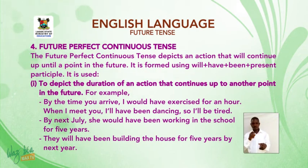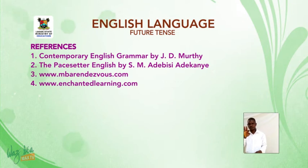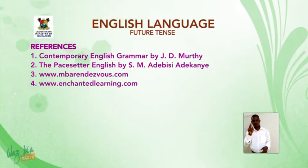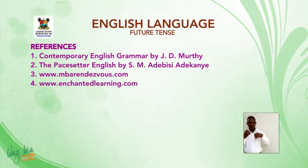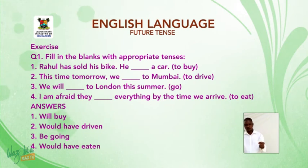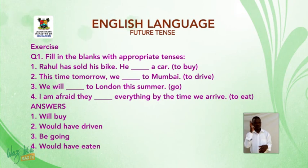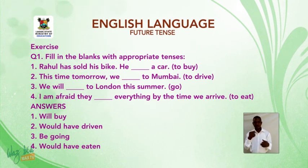That's the end of today's lesson. For references, you can consult Contemporary English Grammar by J.D. Muddy, Depesitar English by S.M. Adebisadekoye, or visit www.mbarendo.com or www.enchantedlearning.com. For today's exercise, provide the appropriate verb: 1. Rahul has sold his bike, he dashed a car. 2. This time tomorrow, we will dash to Mumbai. 3. We will dash to London this summer. 4. I am afraid dash everything by the time they arrive. Thank you. God bless you.